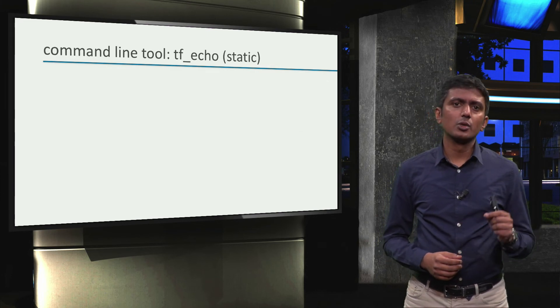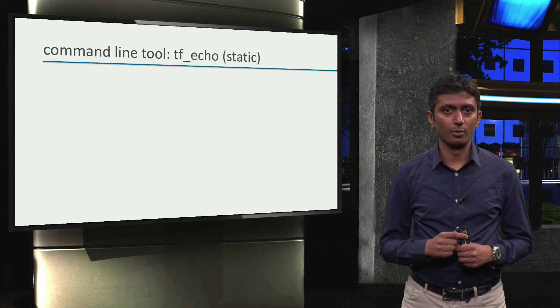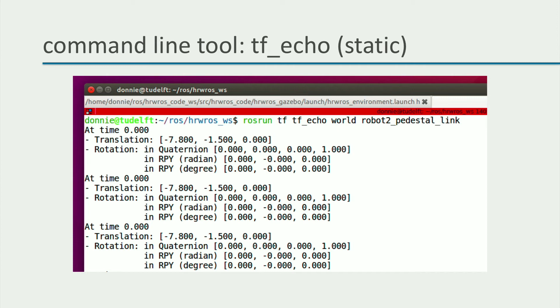But before we conclude this video, let's explore the tf_echo tool. First, the static case, where we query a transform between a source and a target frame that never move in our environment. For example, the world and robot2-pedestal-link, and we can clearly see that the transform between these two frames is exactly the same as what we had set up in our URDF. Also, like we learned a couple of videos ago, this reference frame information coincides with the joint origin corresponding to the fixed joint between world and robot2-pedestal-link. Since we only had translation, I have highlighted the translation part of the output here. But note that the rotation also matches.